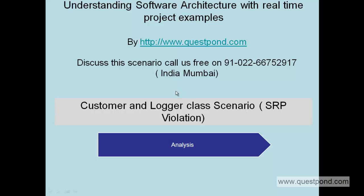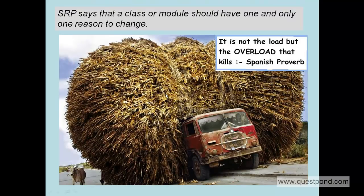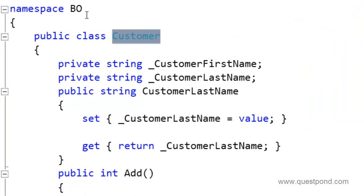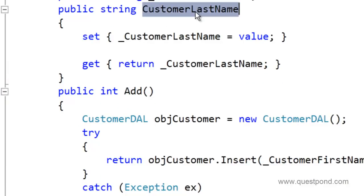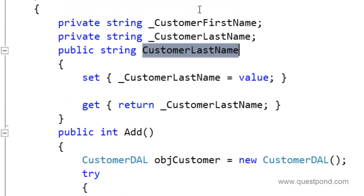So what's the problem here? Currently, the logging functionality is completely entangled into the customer class. In other words, the customer class is violating the SRP principle — that is, Single Responsibility Principle. SRP says that a class, module, or code should have only one and one reason to change.